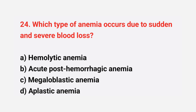Question number 24: which type of anemia occurs due to sudden and severe blood loss? The right answer is option B, acute hemorrhagic anemia.